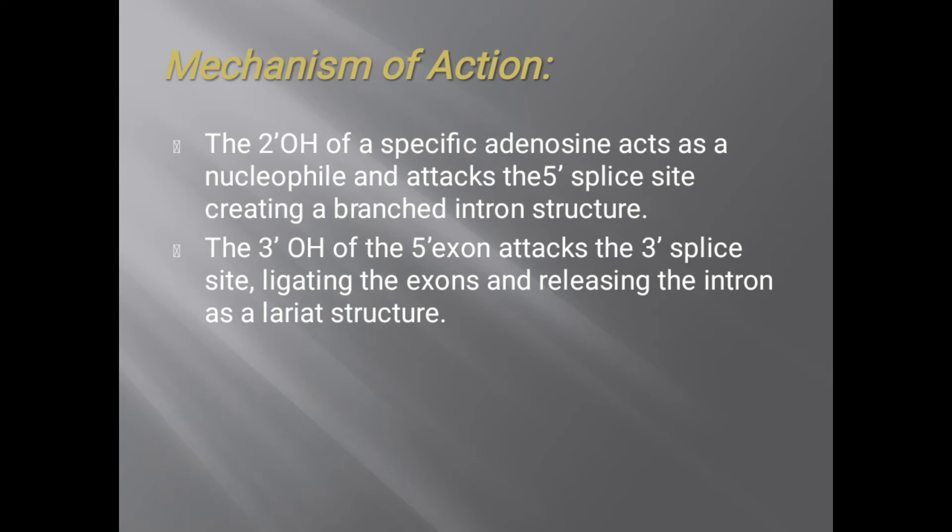In the self-splicing mechanism of Group 2 intron ribozymes, no other protein or RNA enzyme is required. The 2' hydroxyl of a specific adenosine — present within the intron sequence — acts as a nucleophile. This is different from Group 1 intron splicing, where a free guanosine not within the intron is used. The 2' hydroxyl attacks the 5' splice site, creating a branched intron structure. Then the 3' hydroxyl of the 5' exon attacks the 3' splice site, ligating the exons and releasing the intron as a lariat structure.